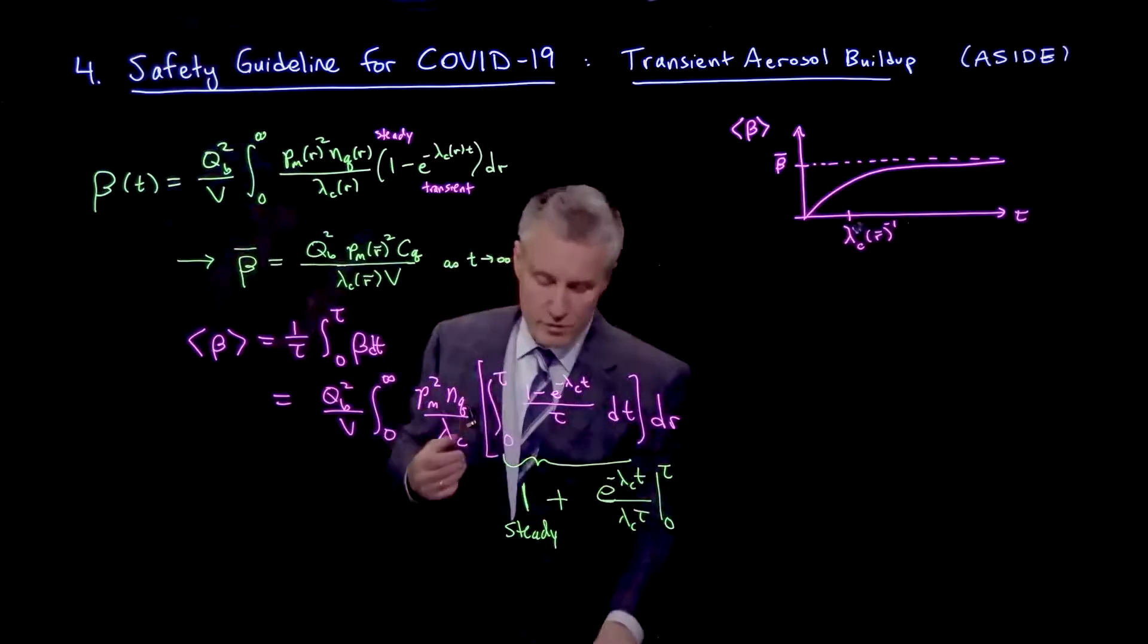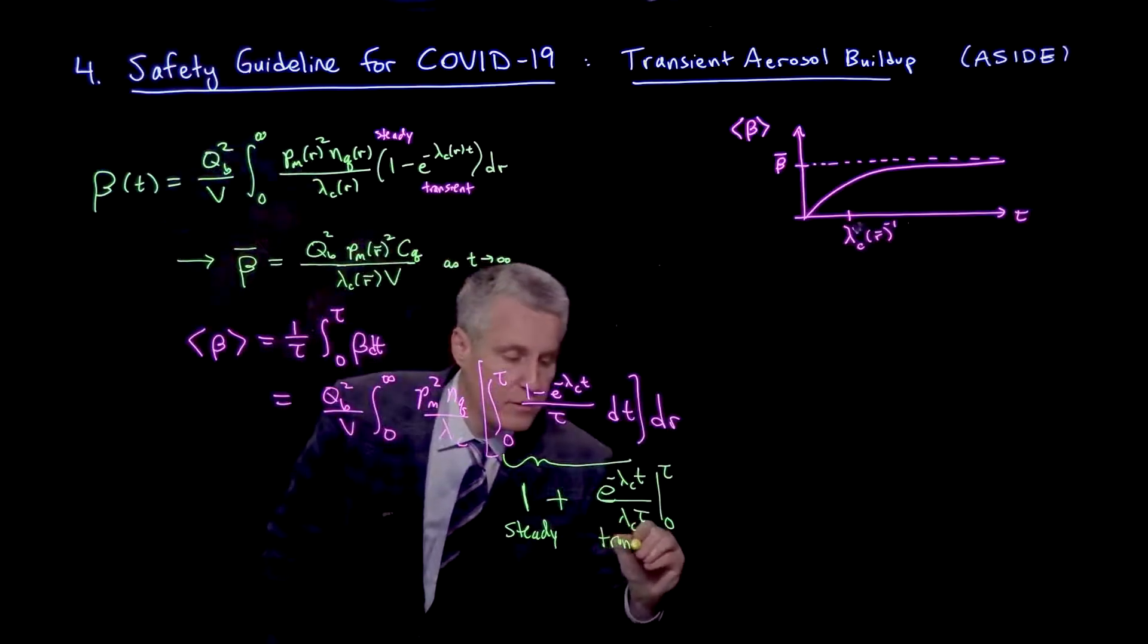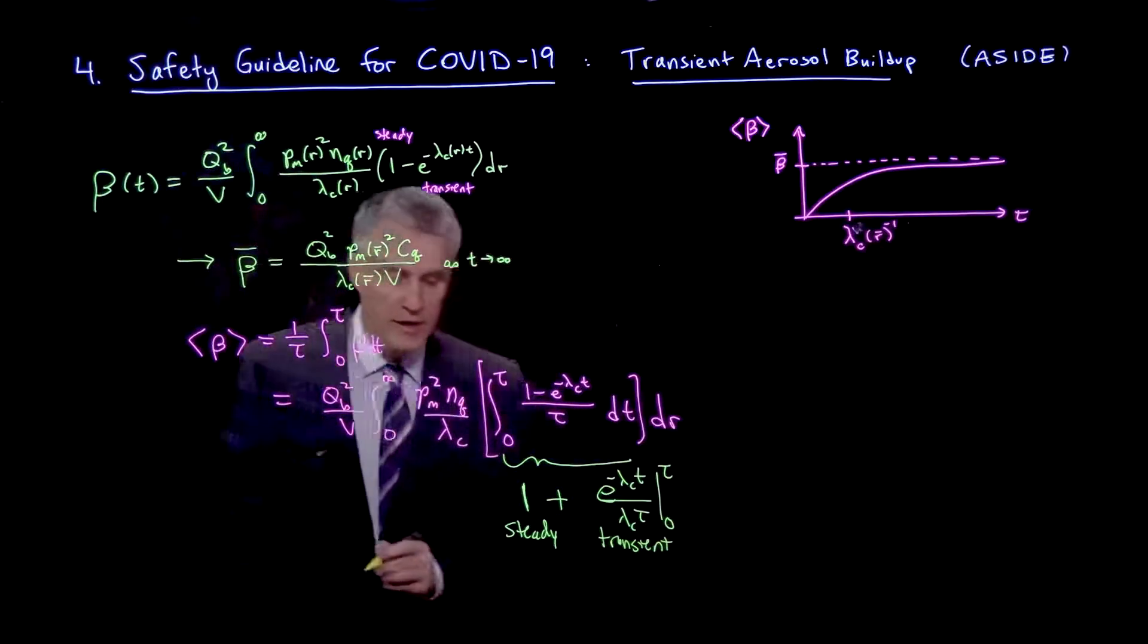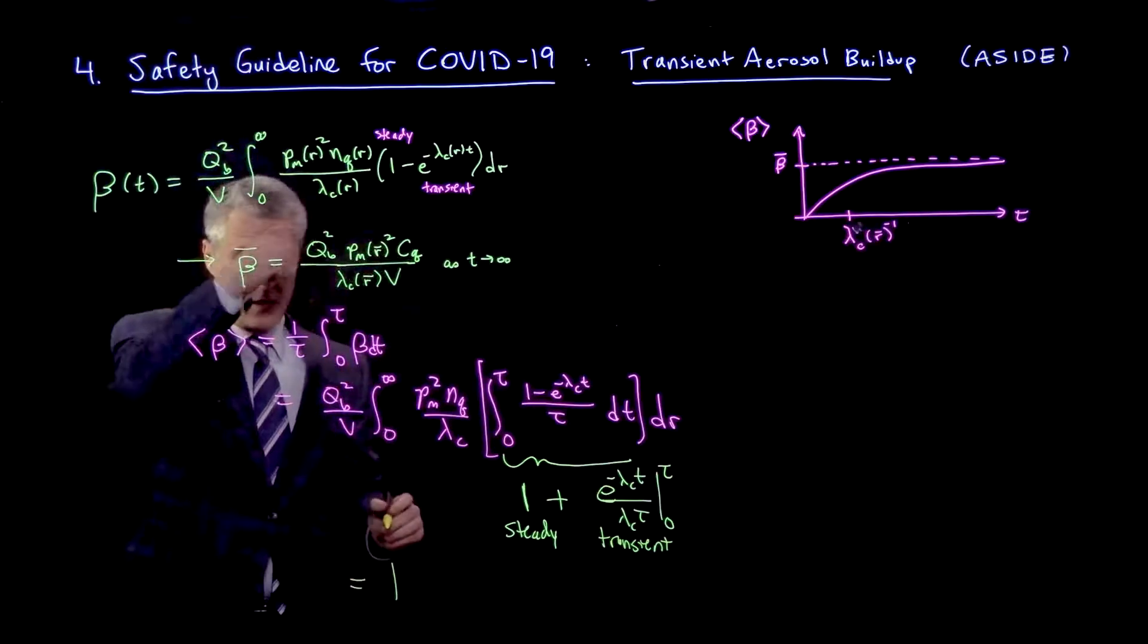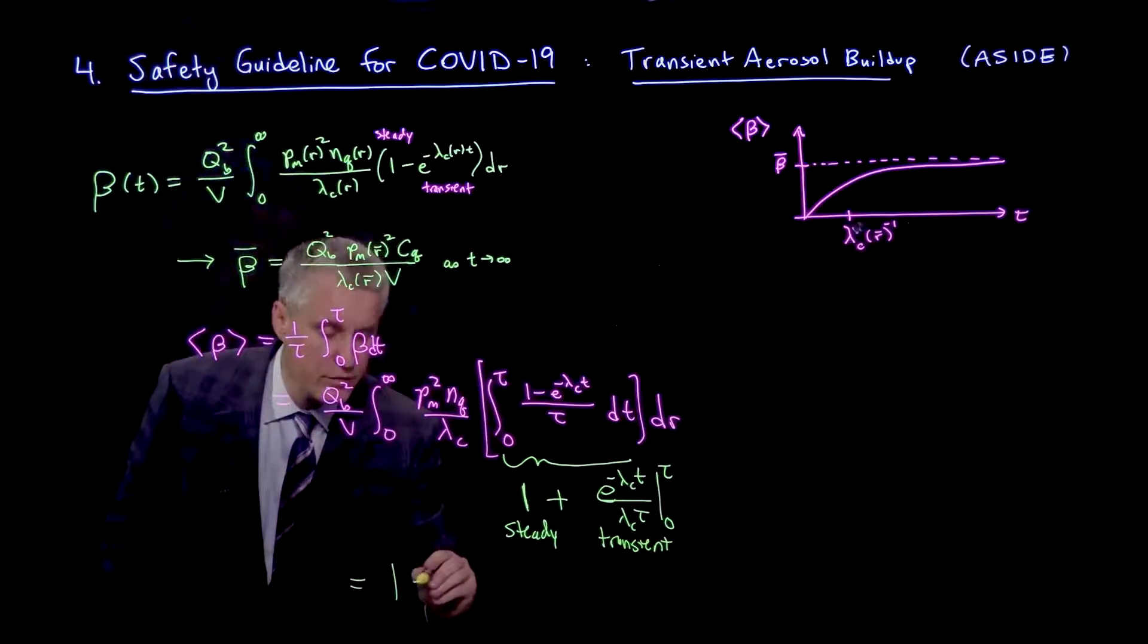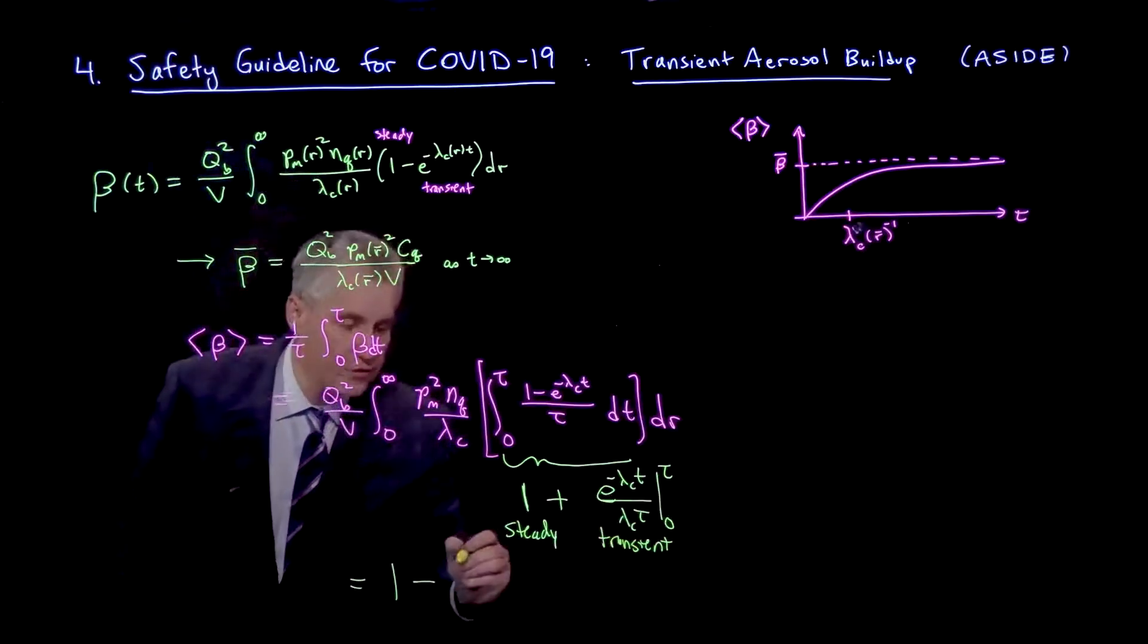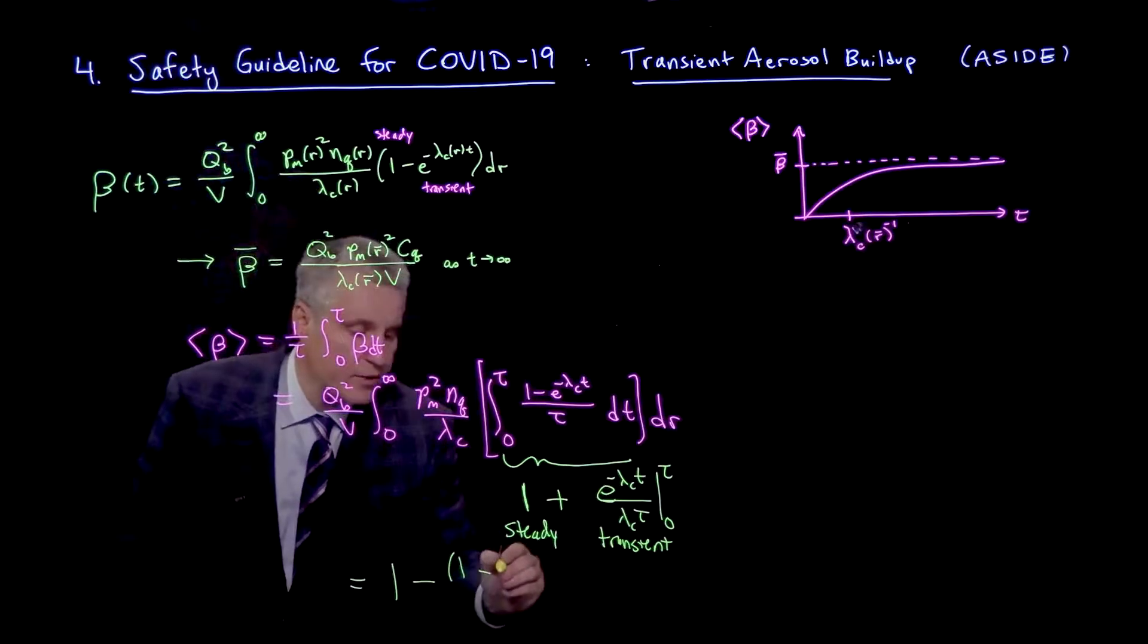So let's continue calculating this right here now. So this is the transient, and I can write this as 1. And if I evaluate here, I can put it this way as minus. And then I evaluate first at the lower limit, which gives me another 1, minus, and then evaluating the upper limit, which is tau.